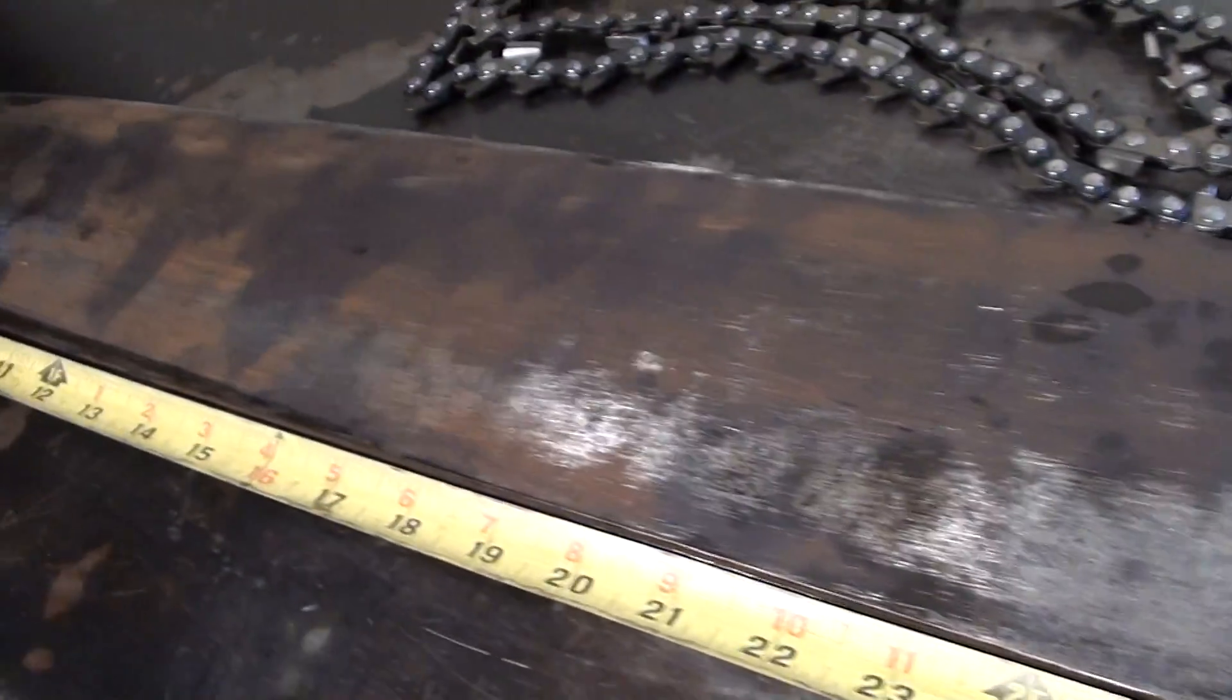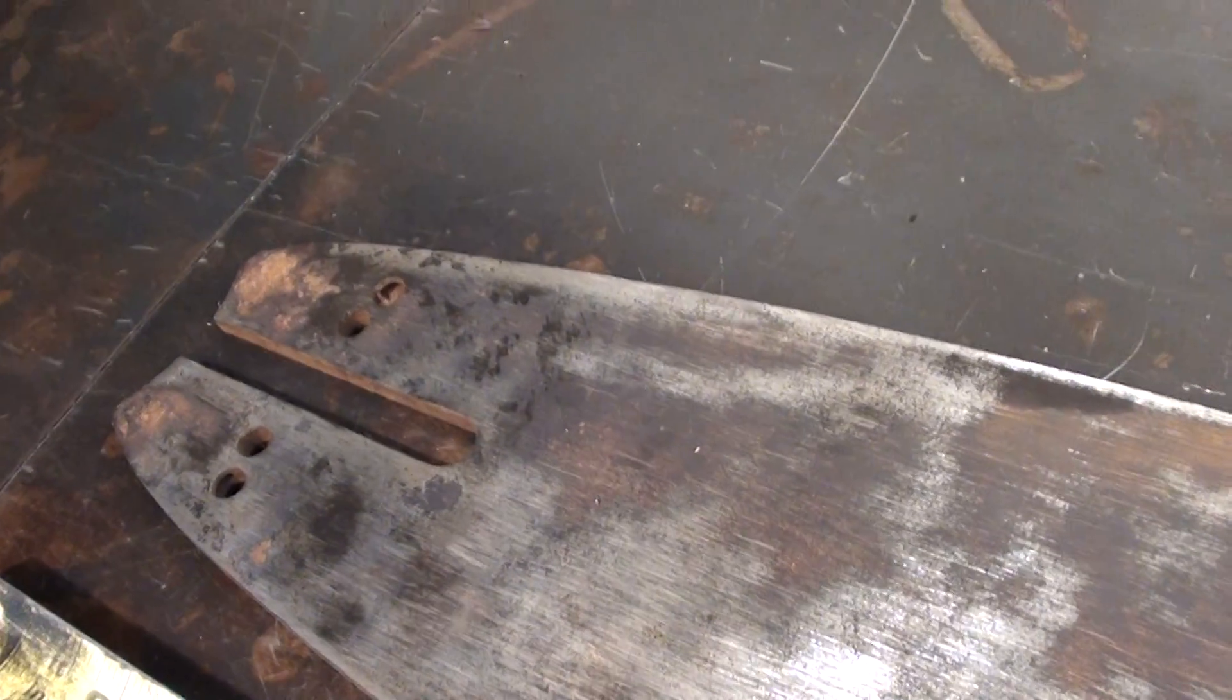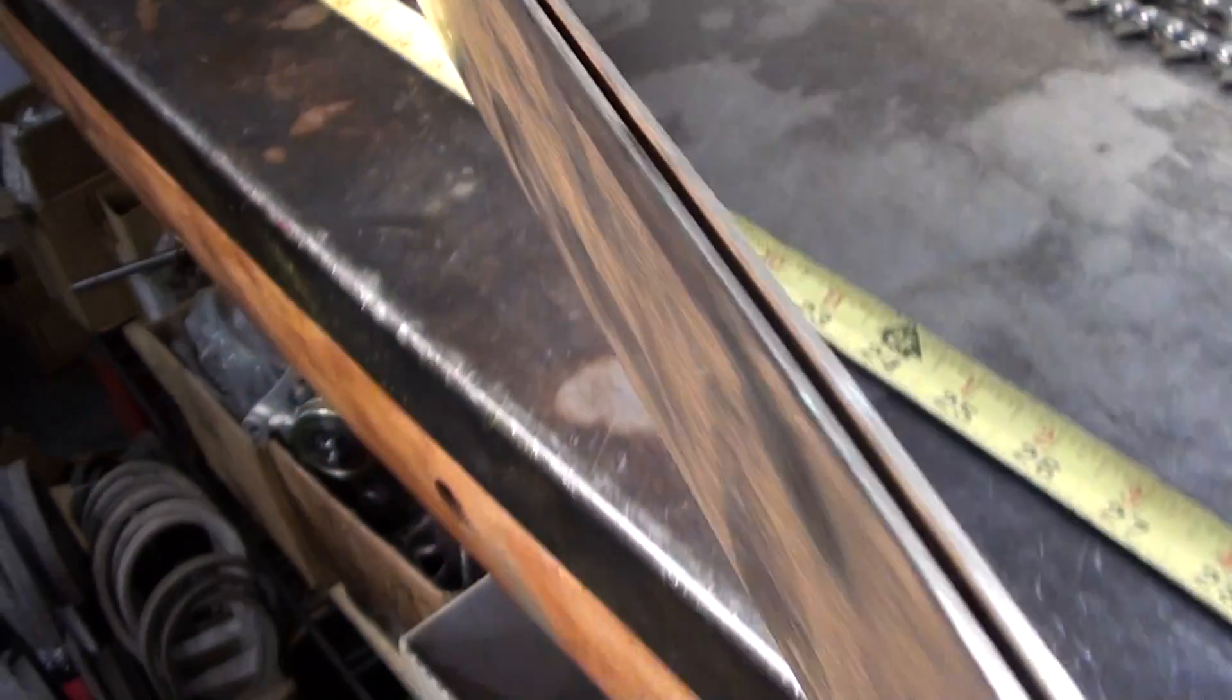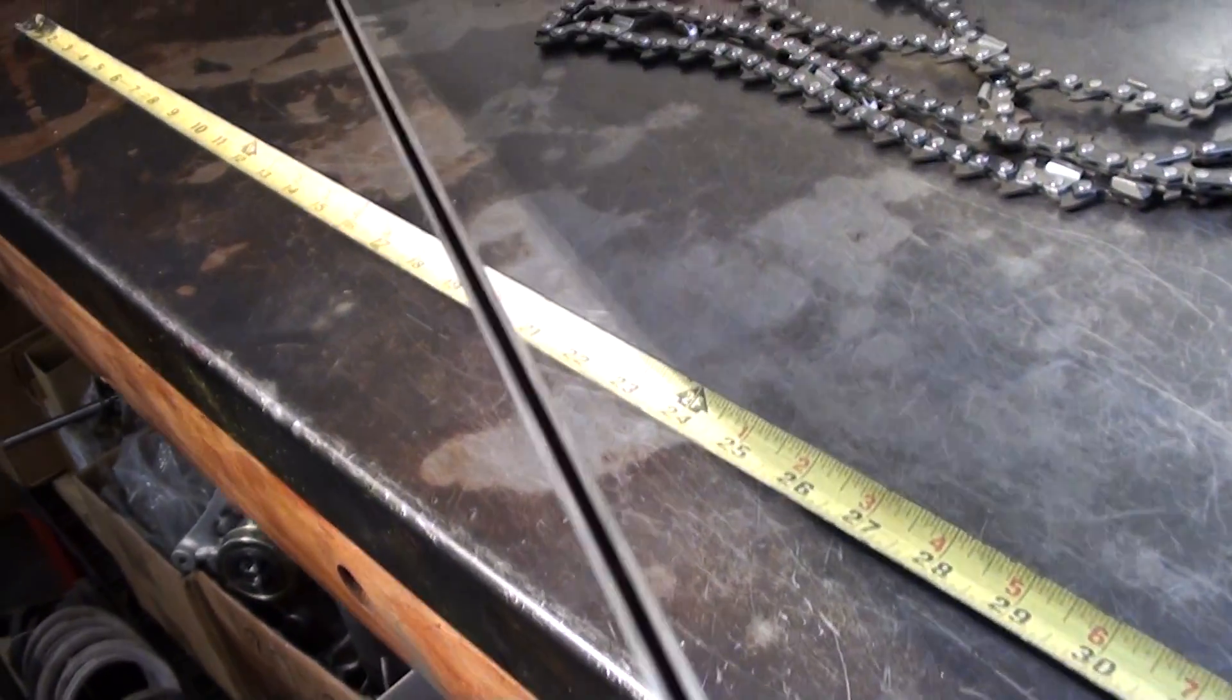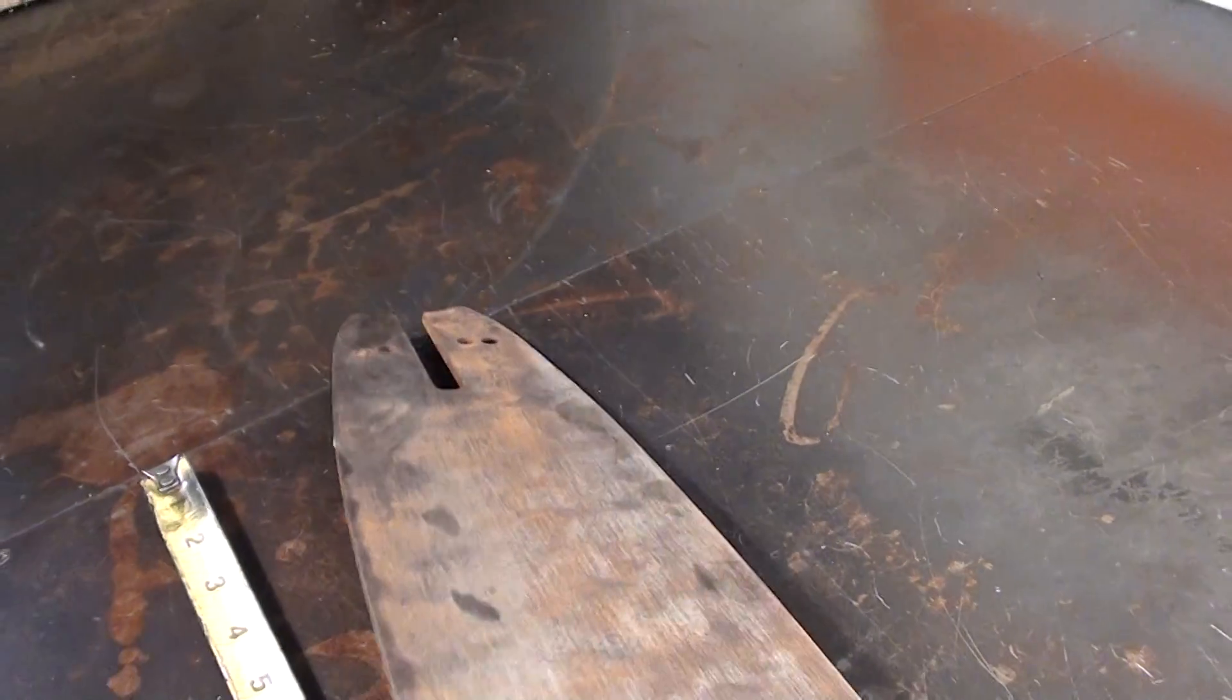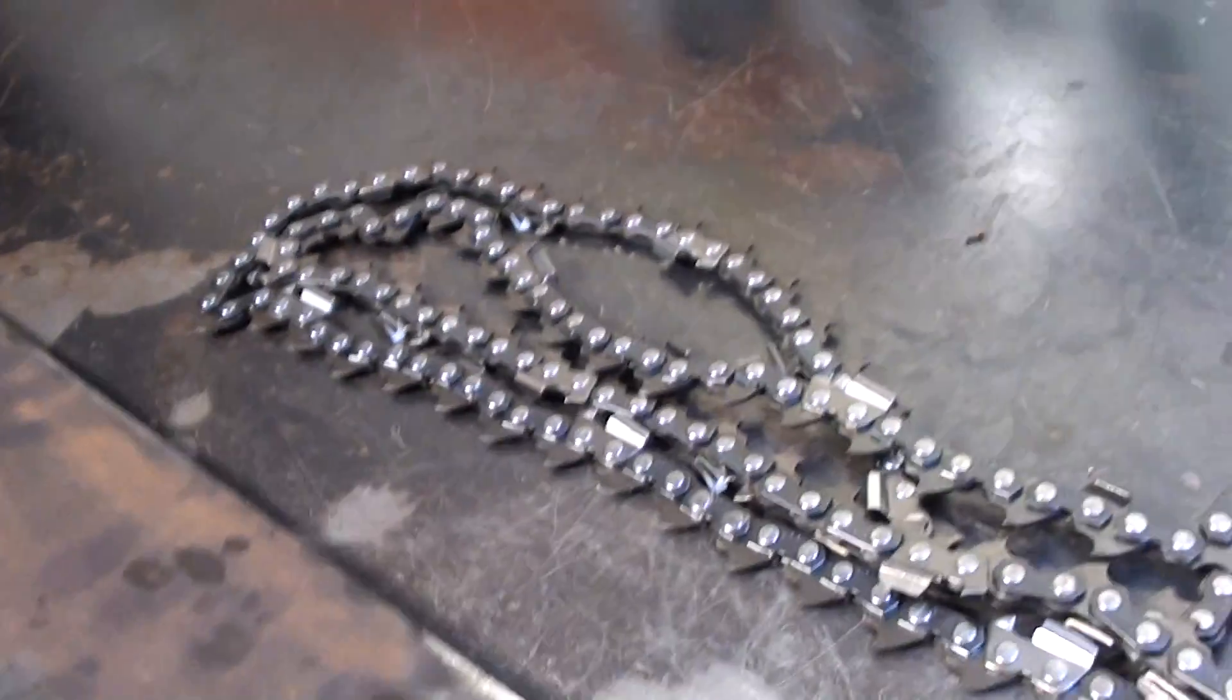There's a typical pattern for the bar mount. Rails are in great shape. It's a General manufactured bar, made by General, very popular bar for these McCullough 125s. Comes with a new chain, a new .404.